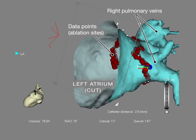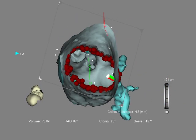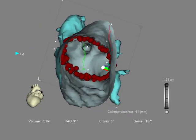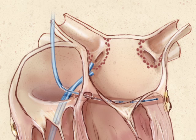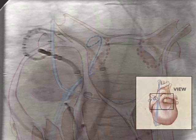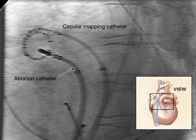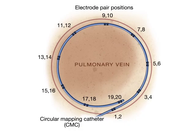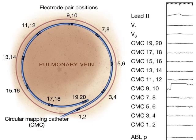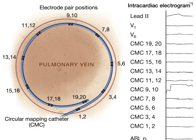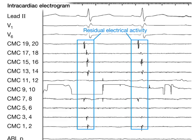Data points are added onto the three-dimensional reconstruction display as the procedure progresses. After the initial ablation circles are completed, the circular mapping catheter is placed sequentially into each of the pulmonary veins to check for electrical isolation. The circular mapping catheter is comprised of electrode pairs that detect electrical activity at specific locations, recorded on an electrogram.